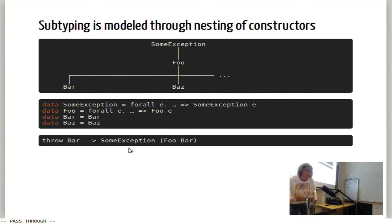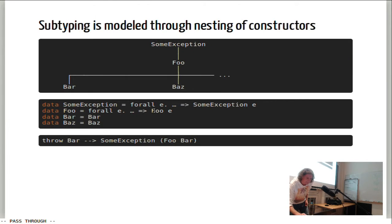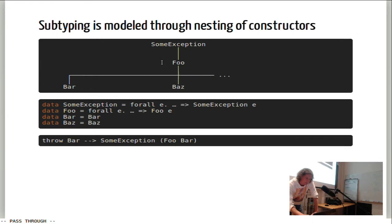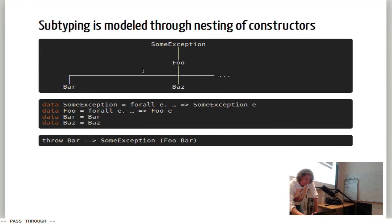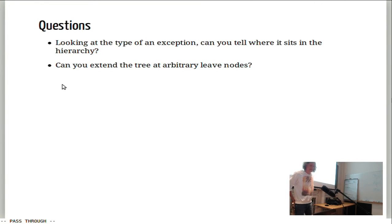So that's the basic idea — the details are in the paper. When we want to catch exceptions, we just specify a type. We could catch everything by specifying SomeException. If you want to catch Bar and Bus and everything below Foo, you specify Foo. If you only want to catch one specific exception, you specify the type of the leaf.